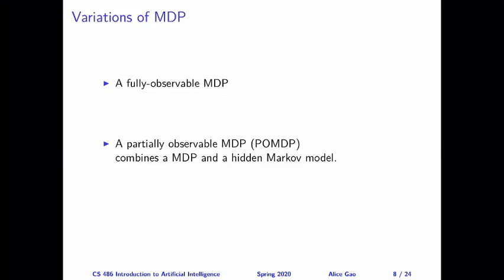The two variations are: one is a fully observable MDP, also just called MDP — you can use the short name — versus a partially observable MDP, which is also called a POMDP.